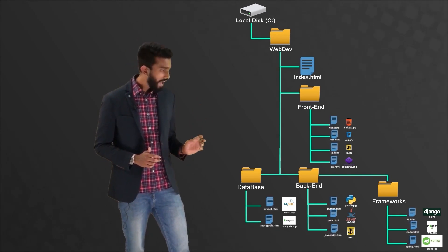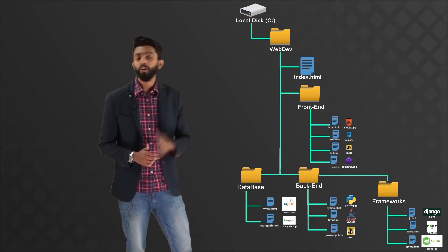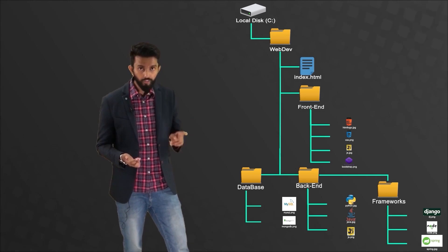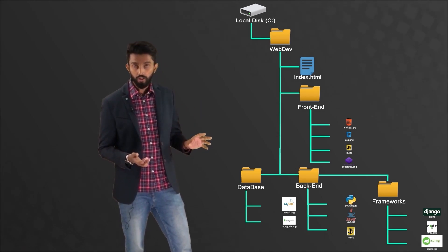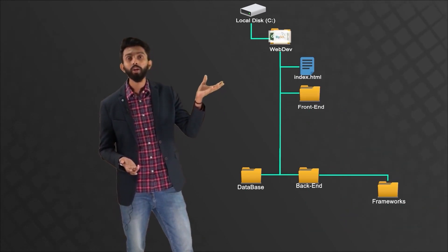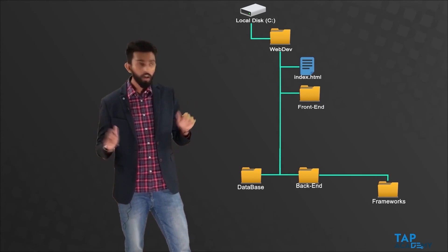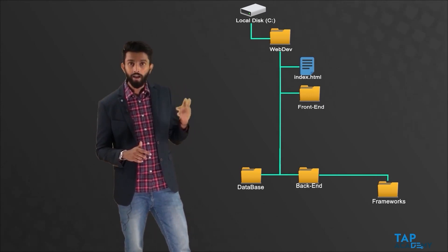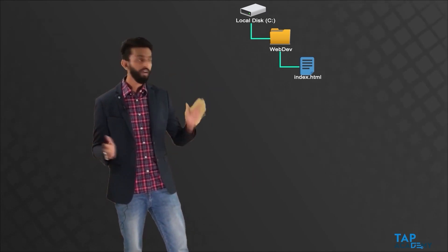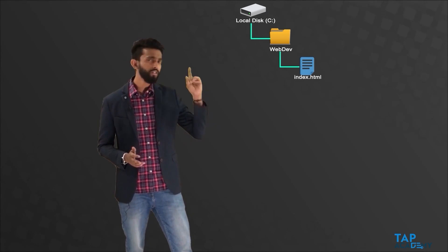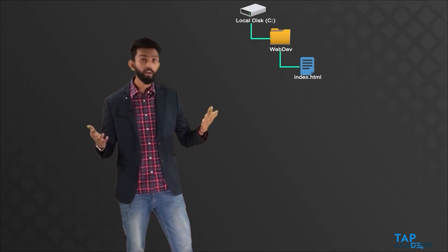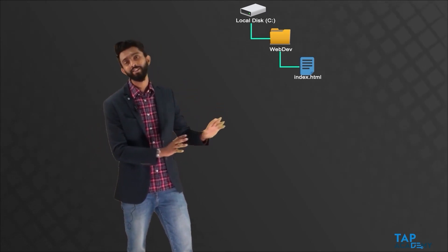What I am going to do is take the code present in all those other HTML files and add everything into index.html. The logo files that are in different folders should also be inside the same folder — I am putting all of them directly inside the web development folder. This means the front-end, back-end, database, and frameworks folders are no longer required. So inside the C drive there is one folder called web development, inside that a single file called index.html and all necessary image files present in the same folder.